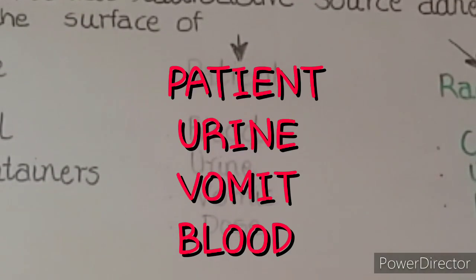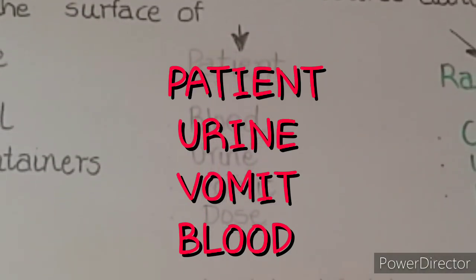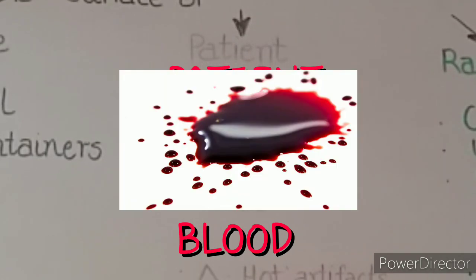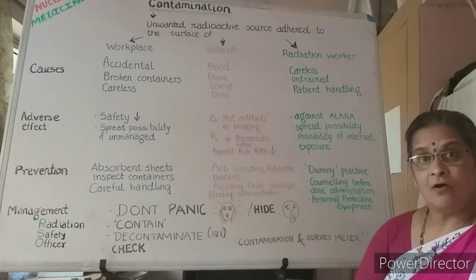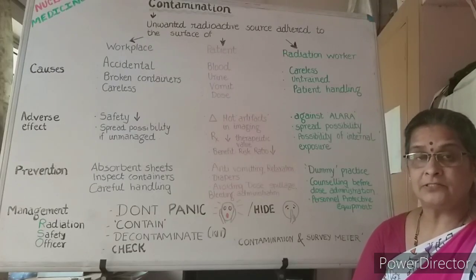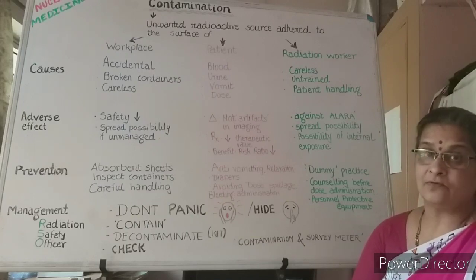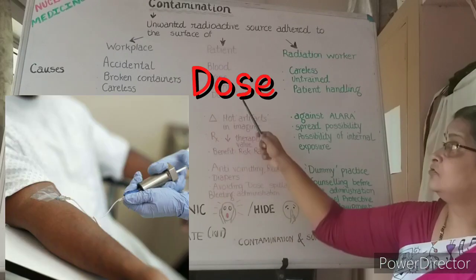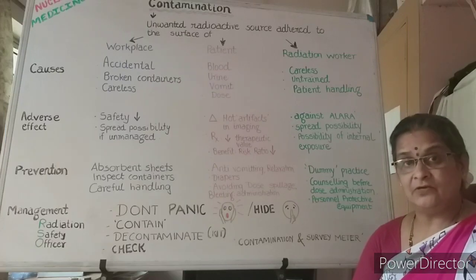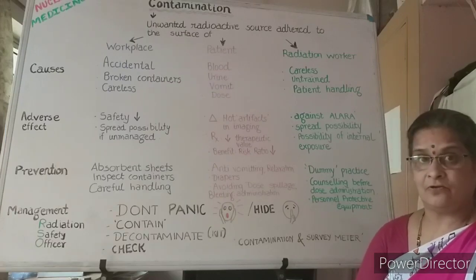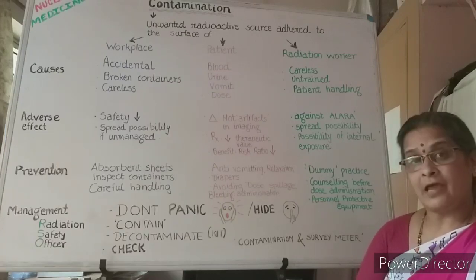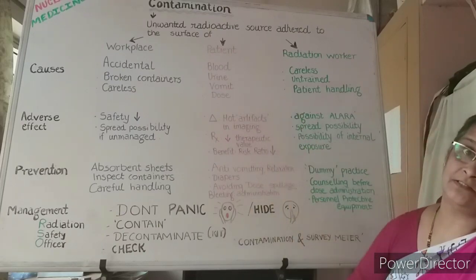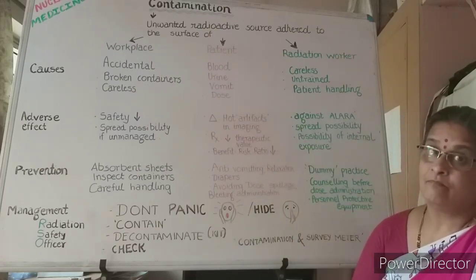As for the patients, the excretory fluids like urine, vomit, and blood which come out of the patient's body when radioactive can be a cause of contamination. Also, when the dose during administration falls on the surface instead of going inside through the right route, that can also cause patient body surface contamination.